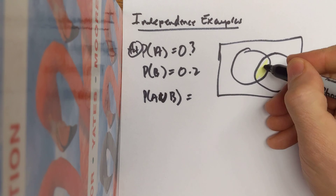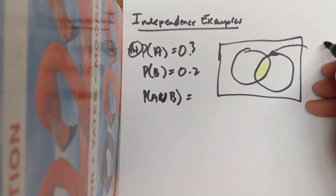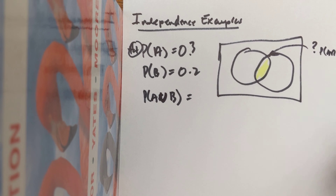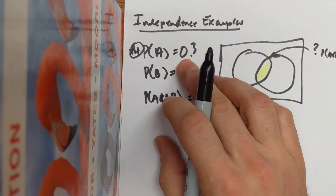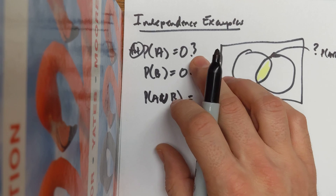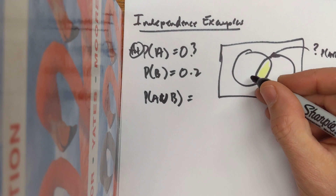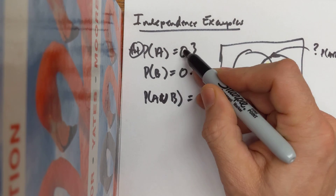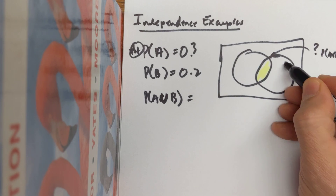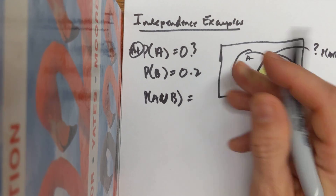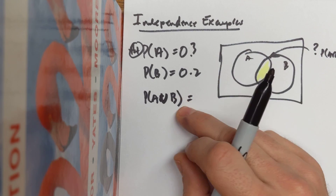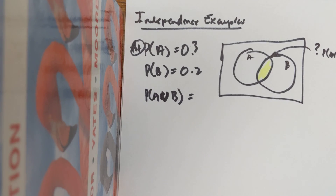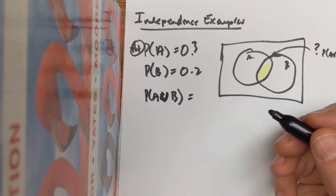They have an intersection, and the smallest this intersection could possibly be — if the intersection was 0, meaning A intersect B equals 0, then the union would be 0.5 (0.3 plus 0.2). But what if event B was entirely in set A? Then the union would just be 0.3. So it's going to be some number between 0.3 and 0.5, but how do we know what it is? We need another fact.